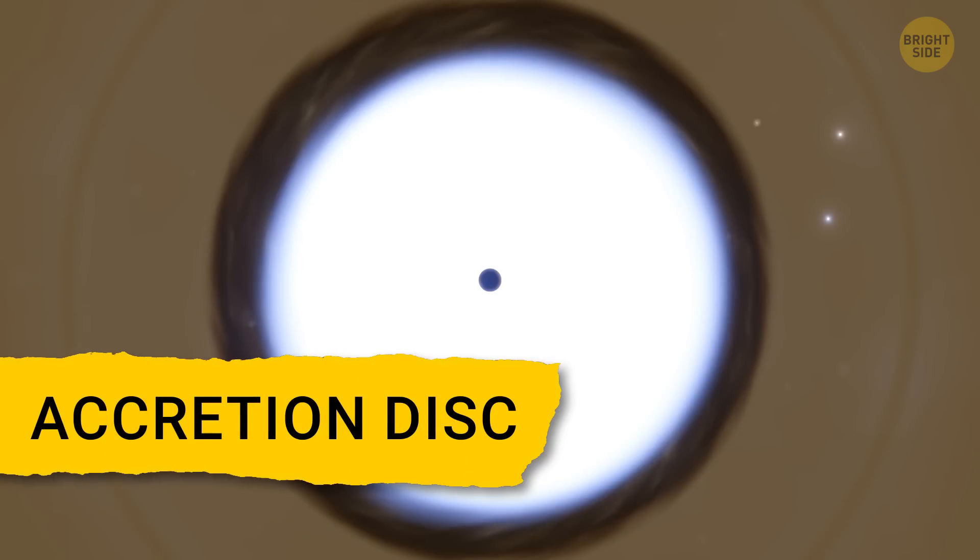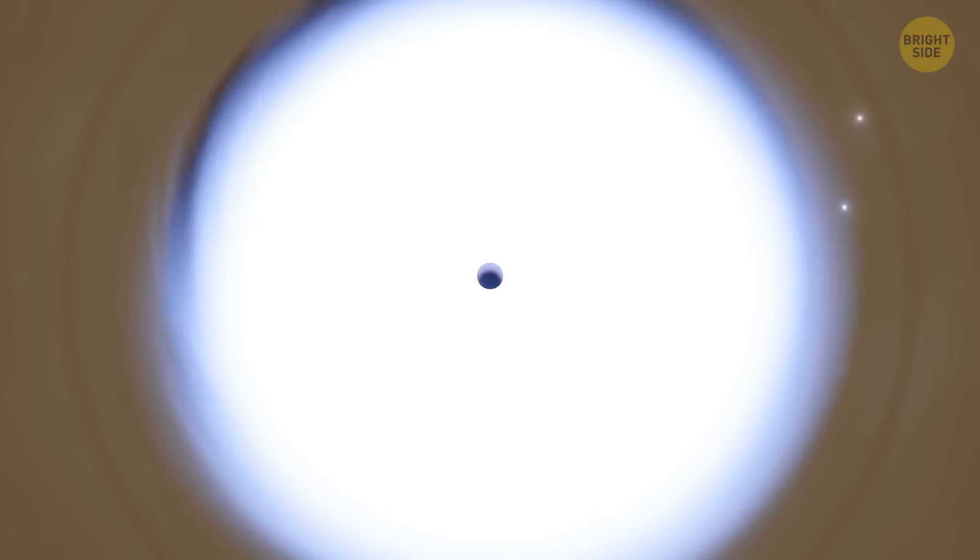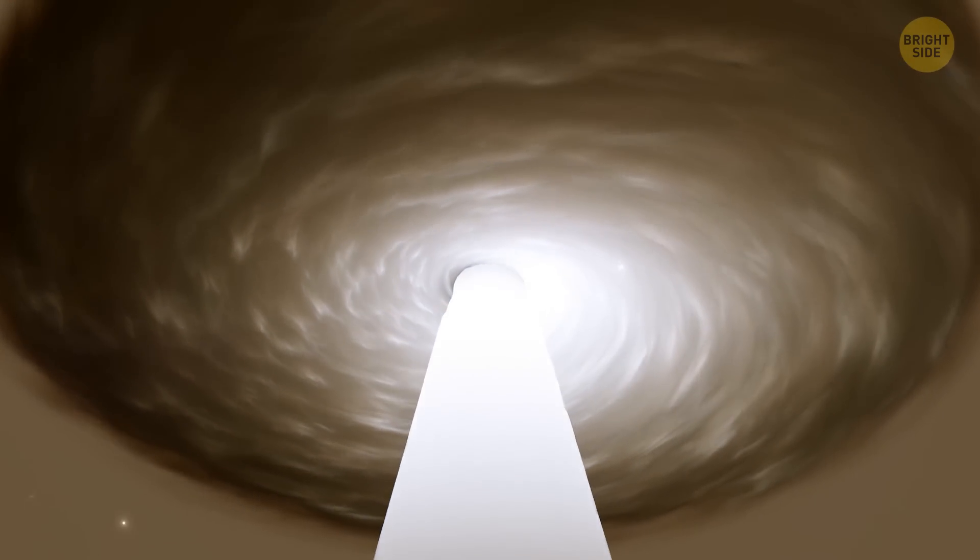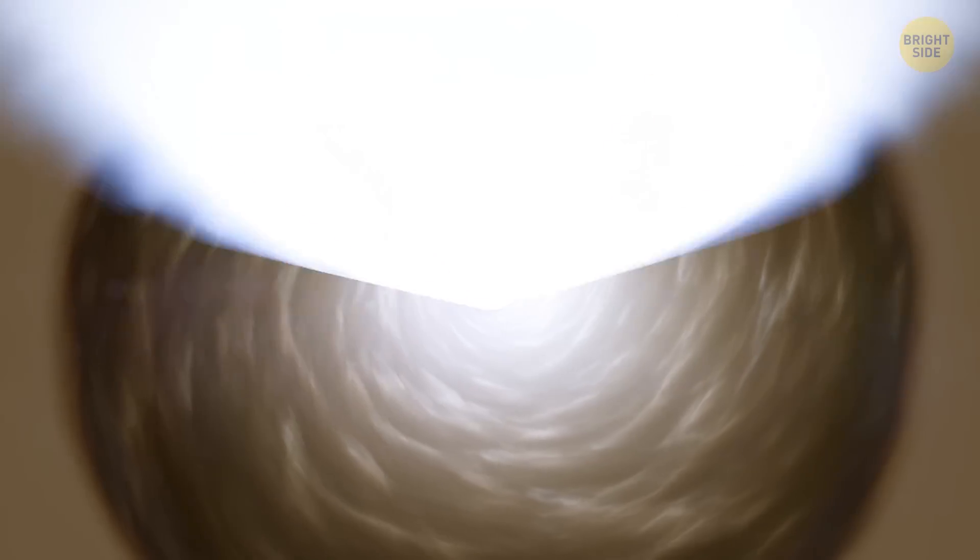This disk, called the accretion disk, can shoot out streams of material at incredibly high speeds, almost like powerful cosmic jets. And that could be exactly what we see as those sudden bursts of light. Again, it's just a theory.